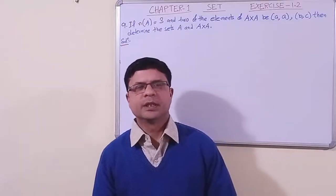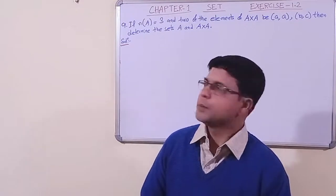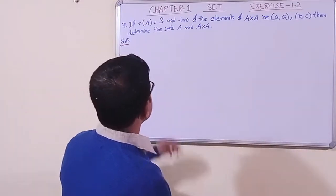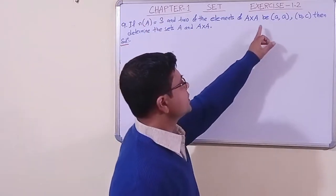Hello students, we are in exercise 1.2 of the chapter Set. We have taken question number 9. Let us read the question. If number of elements of set A is 3 and two of the elements of A cross A are (a, a) and (b, c), then determine the set A and A cross A.